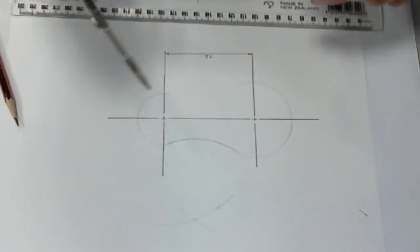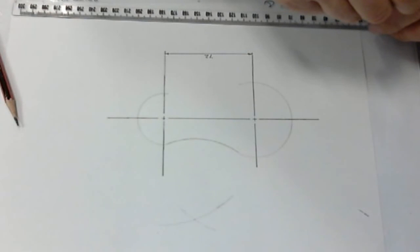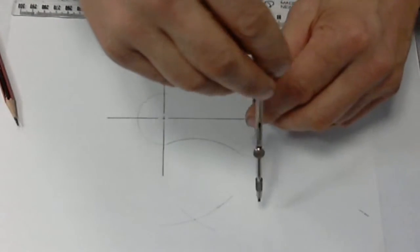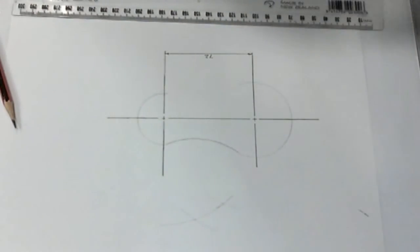And then if we subtract 30 from 100 we have 70 millimeters for the second arc to find that point. So swing an arc through there and we now have our second point that we needed.